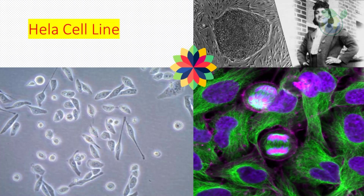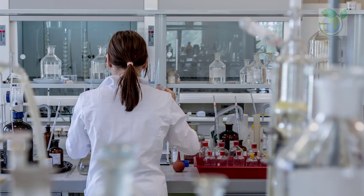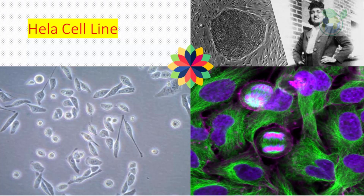The HeLa cell line was the first successful attempt at immortalizing human-derived cells in vitro. In the past, researchers spent more time trying to keep cells alive than performing actual experiments. Soon after, the discovery and availability of the HeLa cell line gave researchers the time and possibility to conduct repeatable experiments on human cells without testing directly on humans. To this day, HeLa cells have saved countless lives, and many scientific landmarks — such as cloning, gene mapping, in vitro fertilization, and the polio vaccine — have been achieved with the use of HeLa cells.